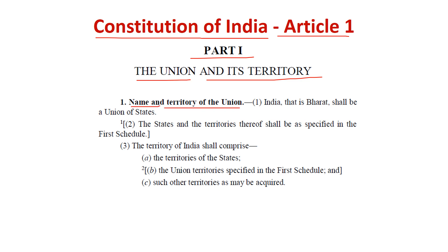Whenever Article 1 comes into picture, please remember it means name and territory of union. Clause 1 says: 'India, that is Bharat.' The very first statement in Article 1 is 'India, that is Bharat.' India has two names — whether you say India or Bharat, both are the same. It shall be the union of states.